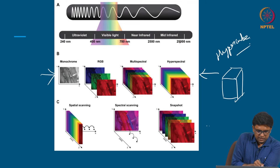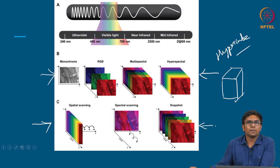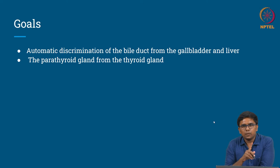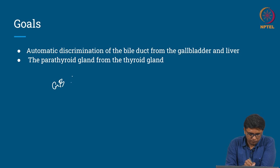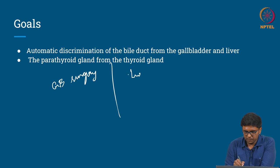The series shown describes how hyperspectral imaging devices collect data. The goals of this study involve two medical conditions: gallbladder surgery and thyroid surgery.